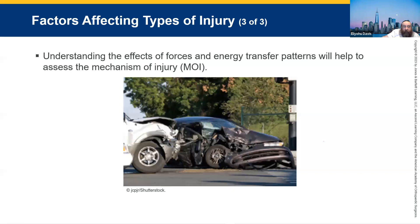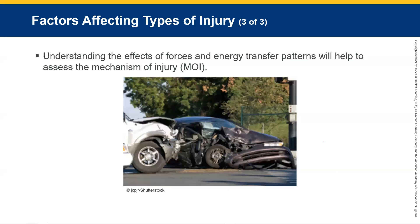With an MVA — a motor vehicle accident — we always talk about the MOI: how did it happen, what exactly happened? This can help us figure out what sort of injuries the patient may have had. With a T-bone injury to the passenger side or the driver's side, the organ that is most susceptible is actually the spleen. Yes, the spleen — you've always got to think about and watch out for that.